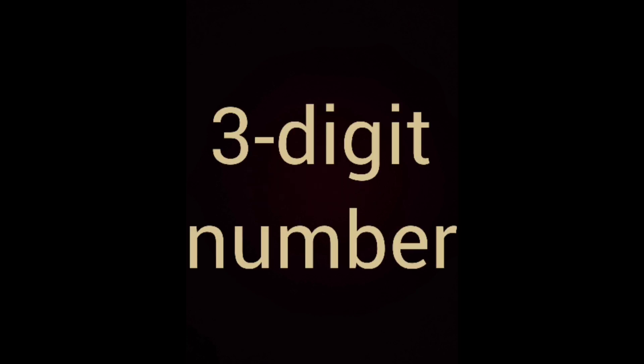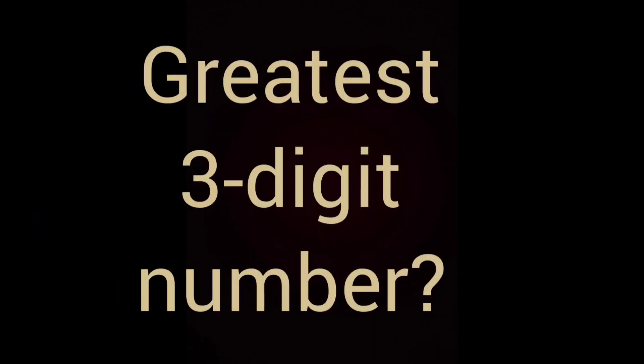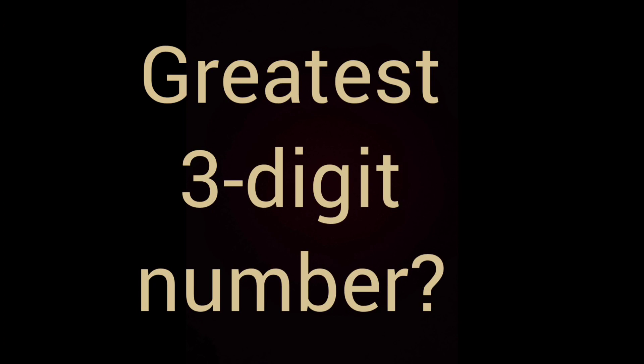So tell me, which number comes after 99? Yes, it is 100, and 100 is a 3-digit number and also the smallest 3-digit number. Tell me, what is the greatest 3-digit number? Yes, 999, because till 999 they will be 3-digit numbers.